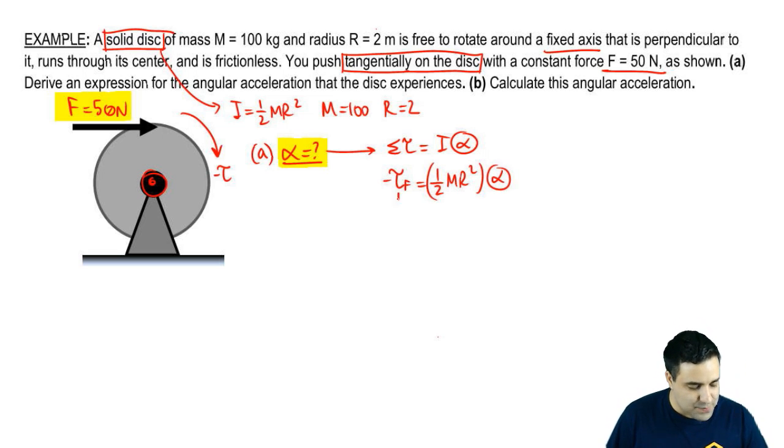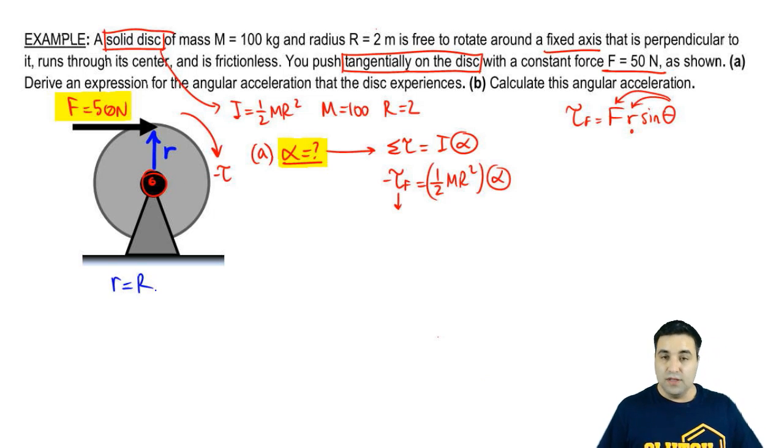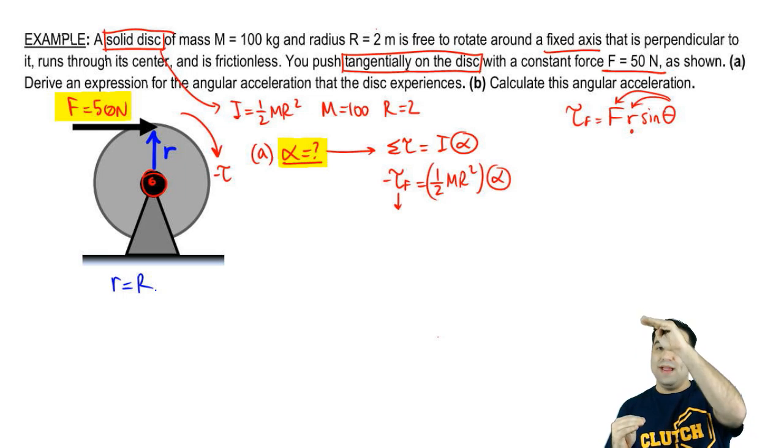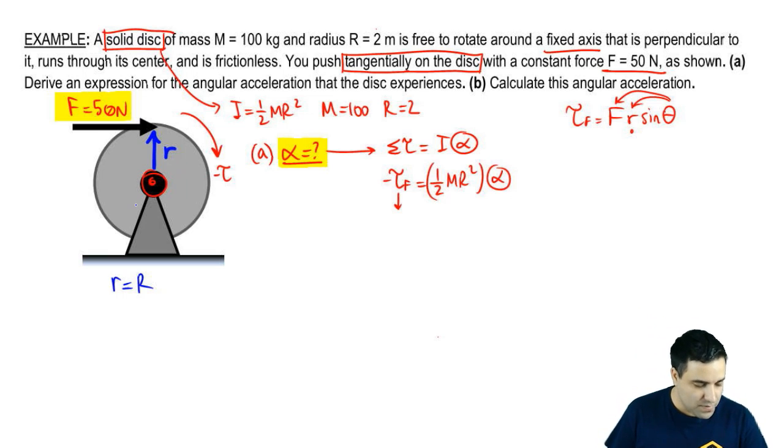So now I have to expand torque of F, which is why it's important to know how to calculate a bunch of different torques. So the torque of any force F is FR sine of theta, where remember, R is the distance from the axis and theta is the angle between F and R. Here, my R vector looks like this. And the length of the R vector is the entire radius of the wheel. And that's because you're pushing all the way at the edge of the wheel.